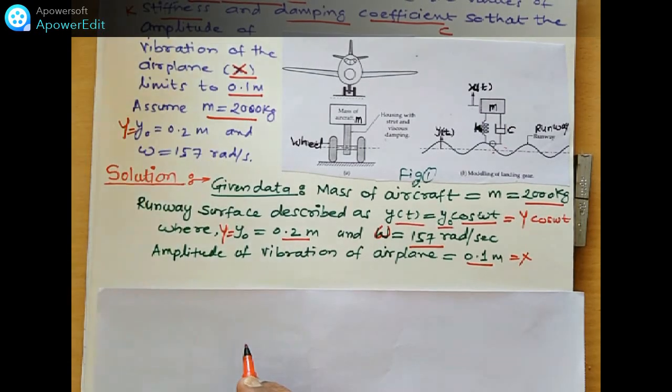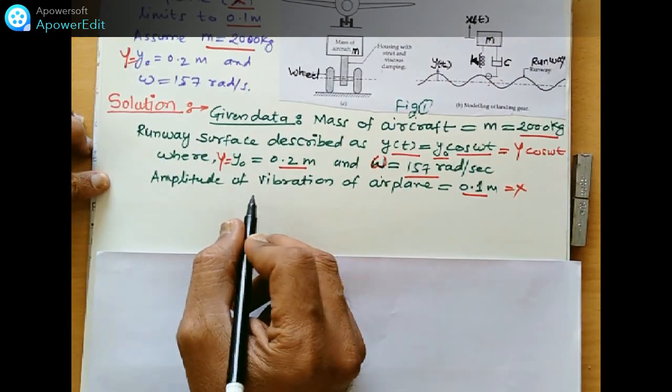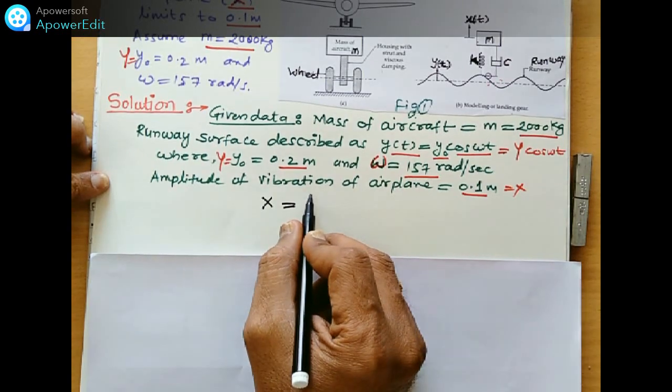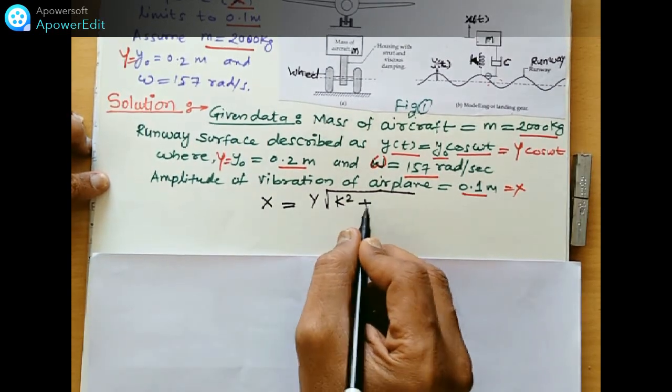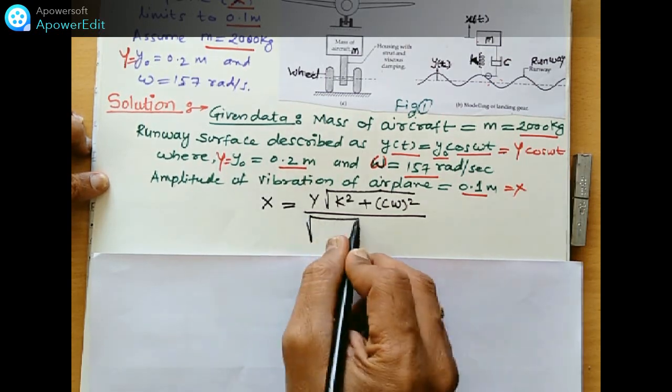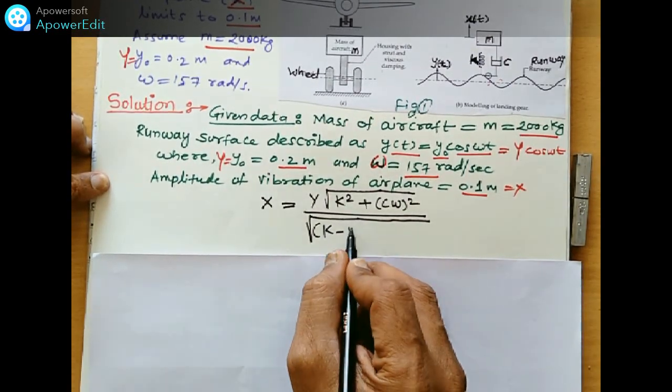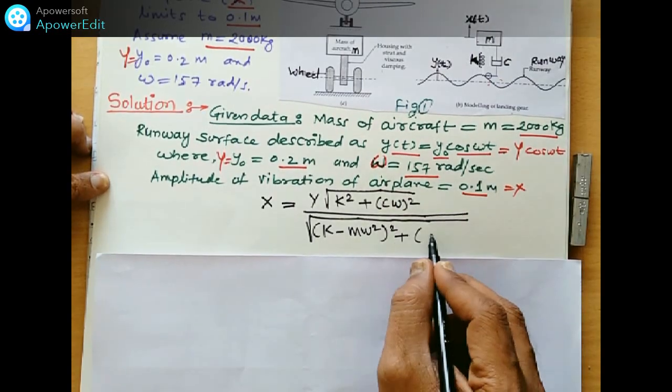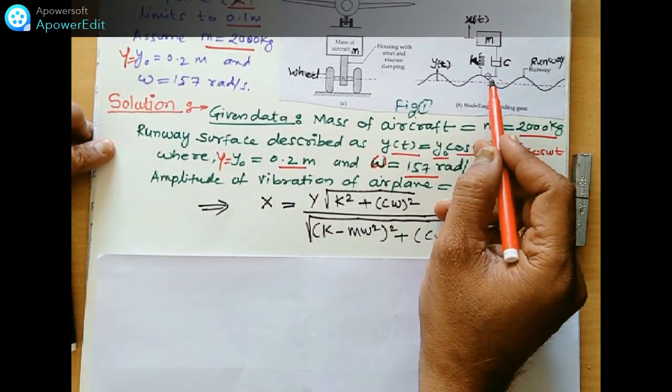Already derived this equation. Watch the video for the forced vibration for the support excitation. That amplitude x we can find out by y0. So what is the formula? This is y times square root of k square plus c omega bracket square upon the denominator. So this is the formula for this case.